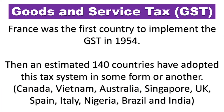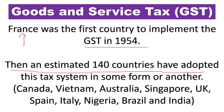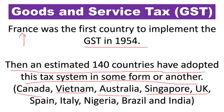France was the first country to implement GST, in 1954. An estimated 140 countries have since adopted this tax system in some form or another. Countries where GST can be found include Canada, Vietnam, Australia, Singapore, the United Kingdom, Spain, Italy, Nigeria, Brazil, and India, which implemented GST in 2017.